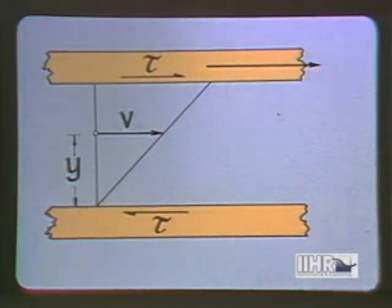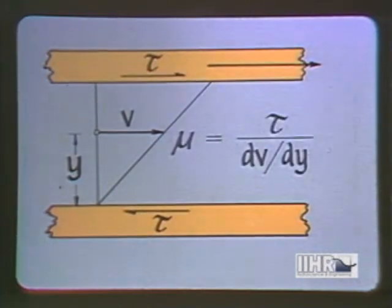If we were to measure the force per unit area tau required to move the one boundary or to hold the other stationary, its ratio to the rate of deformation would be a direct indication of the dynamic viscosity mu of the fluid.